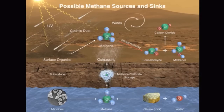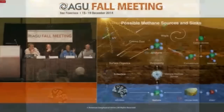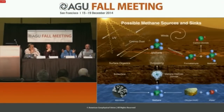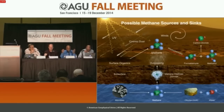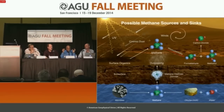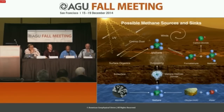Once methane is produced, it can be stored in the subsurface. The storage is in the form of clathrate hydrates of methane — molecular cages in which water ice forms a lattice structure in which methane gas is trapped. From time to time, the clathrates are destabilized, methane escapes and finds its way through cracks and fissures in the rocks and gets up into the atmosphere.